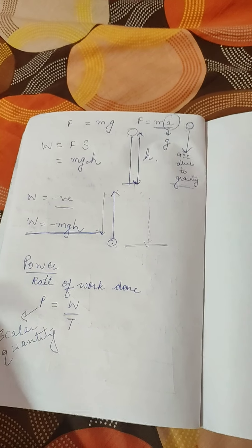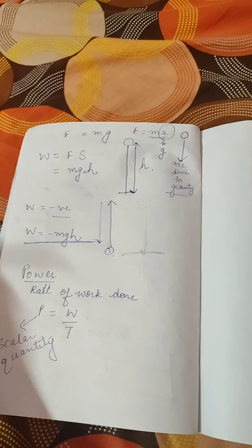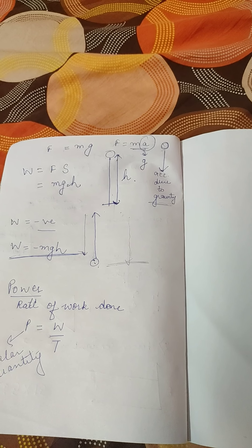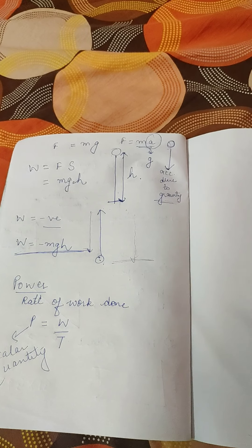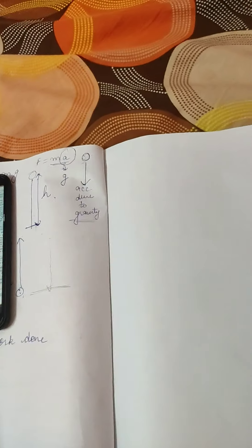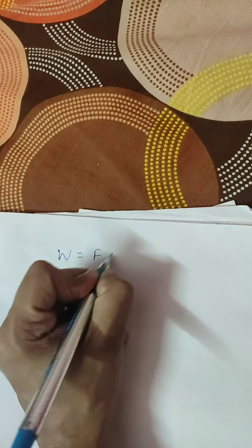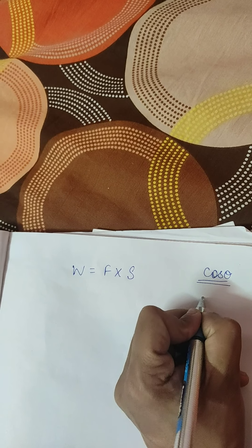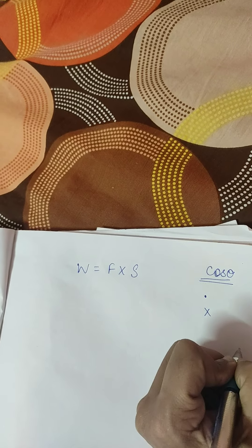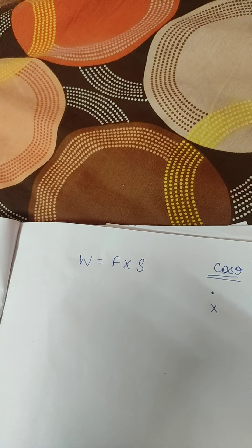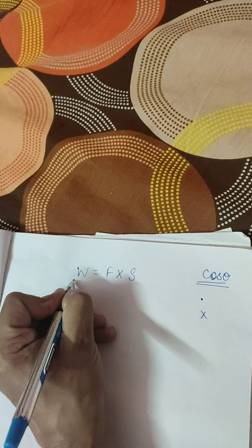We will have numericals on both work done and power. The two things involved are the amount of work done by the source and the time taken. Now a note in your book: we know that work = F × S (using cos theta, the dot product). If we divide the whole equation by time, work done upon time becomes power.